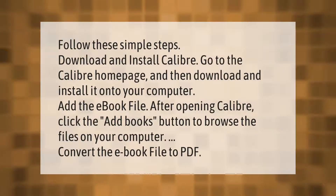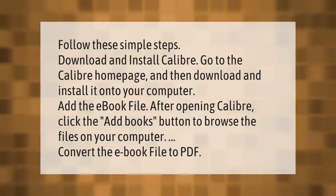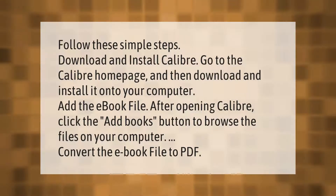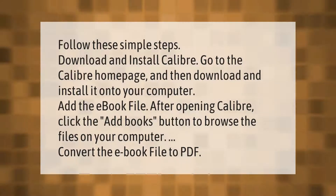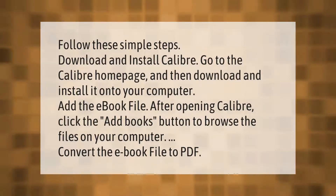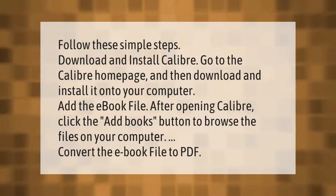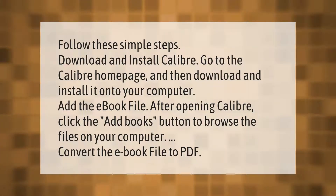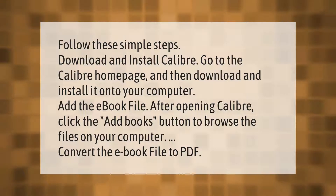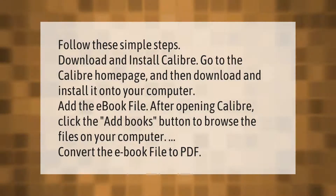Follow these simple steps: download and install Calibre. Go to the Calibre home page, then download and install it onto your computer. Add the ebook file — after opening Calibre, click the Add Books button to browse the files on your computer. Then convert the ebook file to PDF.